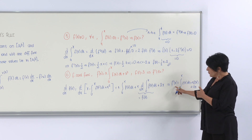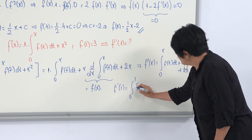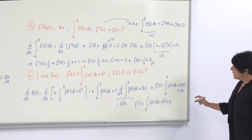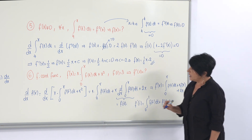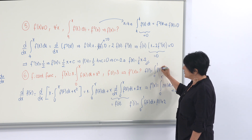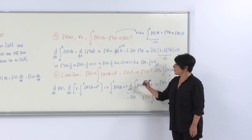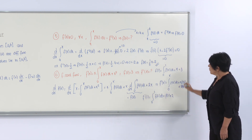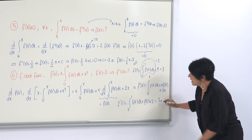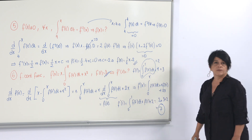They ask for f'(1), so: f'(1) = ∫₀¹ f(t) dt + 1·f(1) + 2. We need ∫₀¹ f(t) dt. Substituting x = 1 into the original equation gives ∫₀¹ f(t) dt + 1 = f(1) = 3, so ∫₀¹ f(t) dt = 2. Therefore f'(1) = 2 + 3 + 2 = 7.